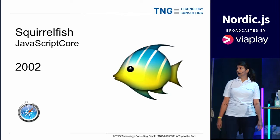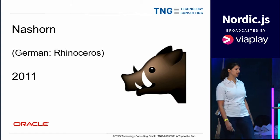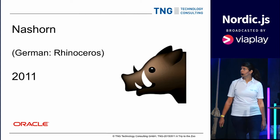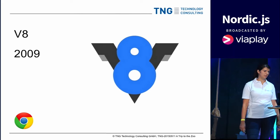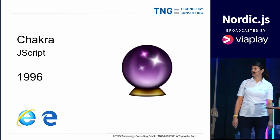In Safari we have SquirrelFish — the marketing name for JavaScriptCore, first written in 2002. And we have Nashorn. Nashorn is the German name for rhinoceros, and it's Oracle's JavaScript engine implemented in Java that runs on the JVM. And there's V8, the JavaScript engine in Chrome and the one used for Node.js, which came out in 2009. And Microsoft's JScript, also known as Chakra, one of the earlier ones written in 1996 — it's what we have in Internet Explorer.